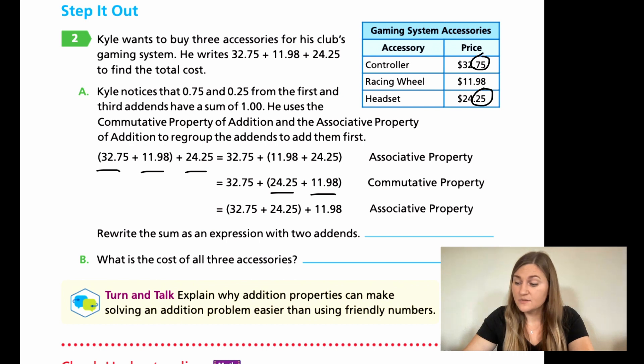Great. Let's go ahead and solve these two. So if I was going to rewrite the sum of the expression with two addends, I'm going to take my 32.75 and 24.25. I know that the 75 and the 25 are going to be one whole. So I know I just have to add one at the very end. So let's look at the 32 and the 24. My ones place is two plus four. I know that's going to be six. And then my three plus my two is going to be five. So I know I have 56. 56 plus about one more for the cents is going to be 57. So I'm going to have 57 and then I'm just going to tag on that 11.98.